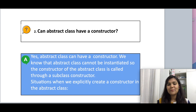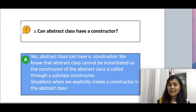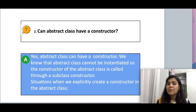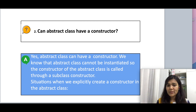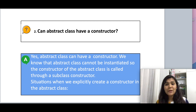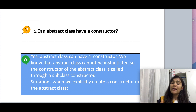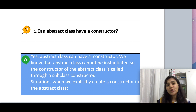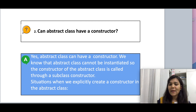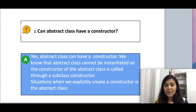Moving on to the second question: can an abstract class have a constructor? An abstract class is one that cannot be instantiated, but it can still have a constructor because the abstract class constructor can be called through the subclass constructor. When we create an object of any subclass, all the constructors in the corresponding inheritance tree are invoked in a top-bottom approach. The same applies to the abstract class — the subclass constructor gets invoked and then it calls the abstract class constructor.